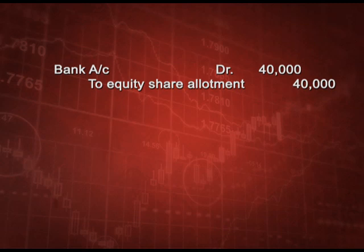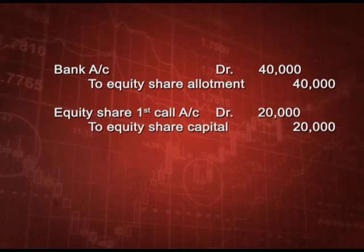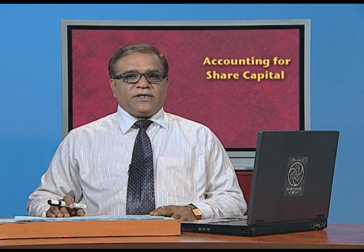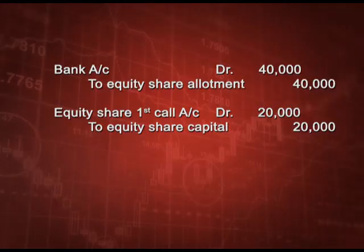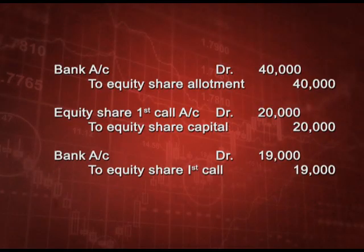Next, first call due: equity share first call account debit rupees 20,000 to equity share capital rupees 20,000. Then the bank receipt entry: bank account debit to equity share first call rupees 19,000 - that is rupees 20,000 total due minus 500 shares into rupees 2, the amount not received from those 500 shareholders.